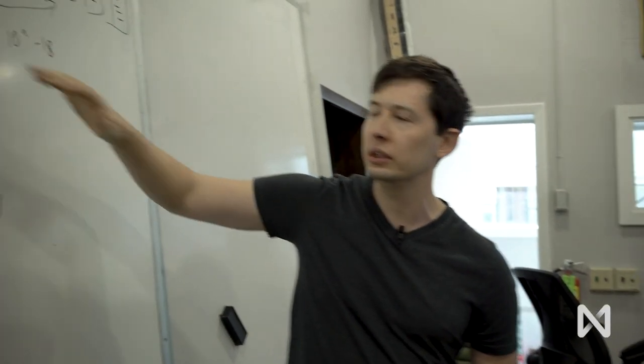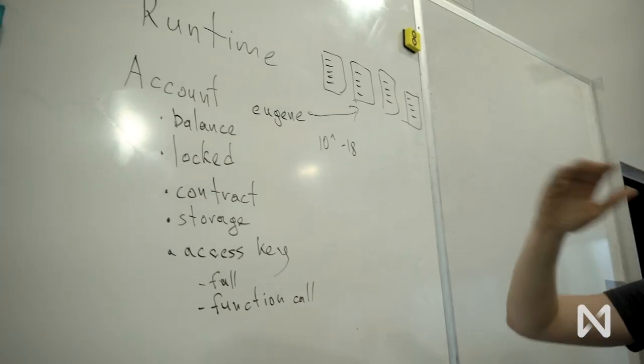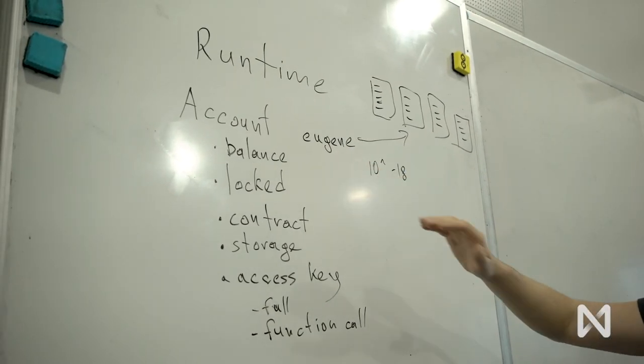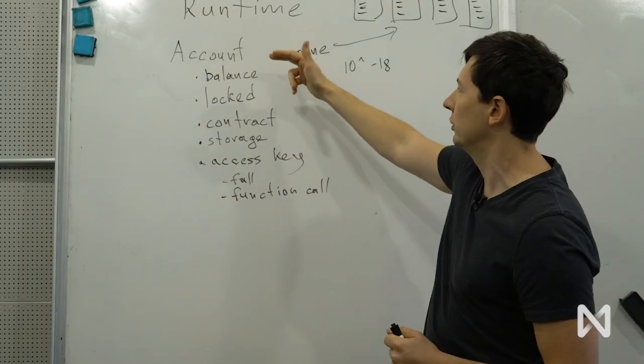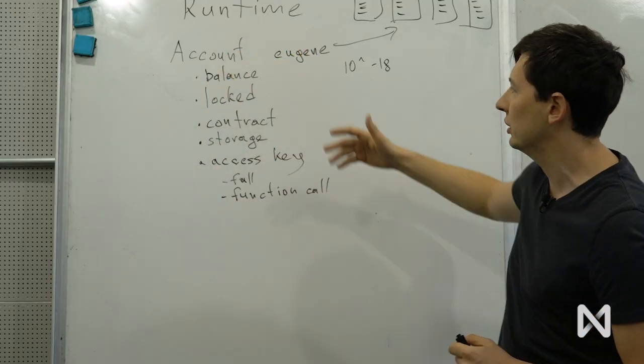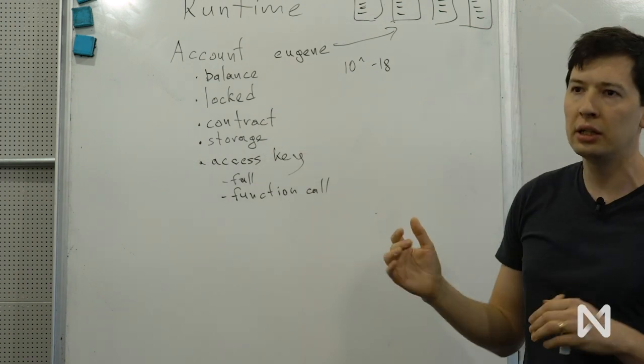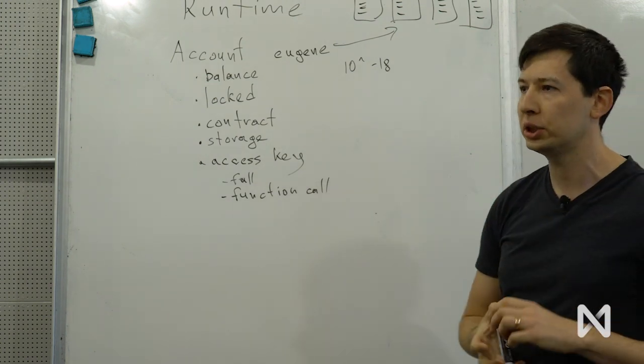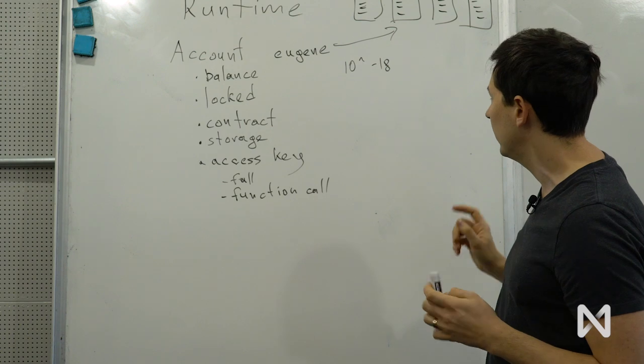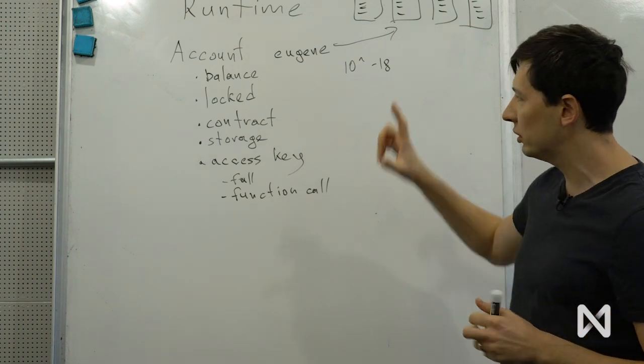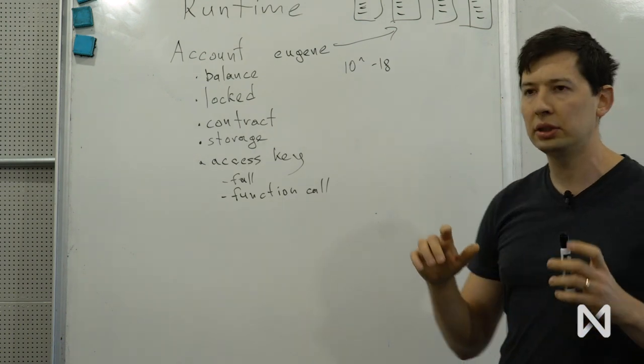But what is always available, what we guarantee, is that if you're interacting with the account, all this data that I mentioned, which is balance, locked balance, contract, storage and all access keys, are all located on the same shard. And this is going to be important when we talk about transactions.